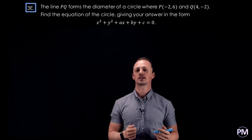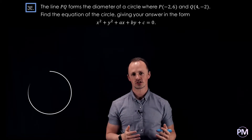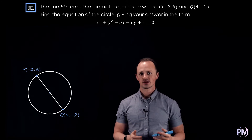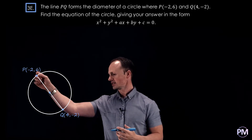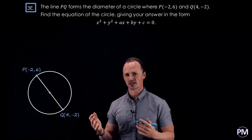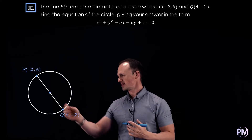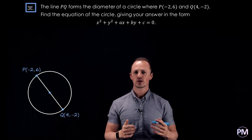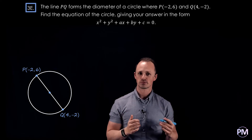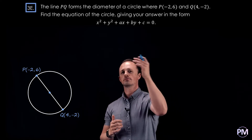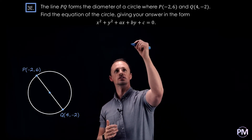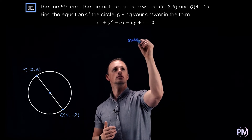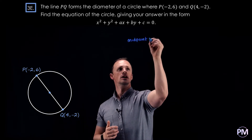In this question we're given two points on the diameter of a circle and we're asked to find the equation of that circle. To start with, we'll consider the fact that these two points are on the diameter, which means the centre must be right in between those two points — it must be the midpoint. So we'll start by finding the midpoint of our two coordinates.